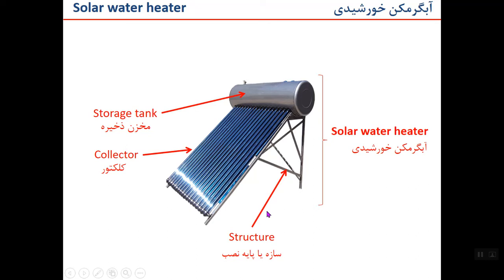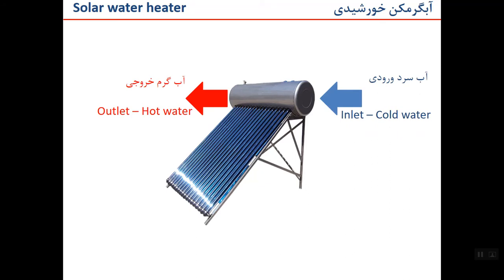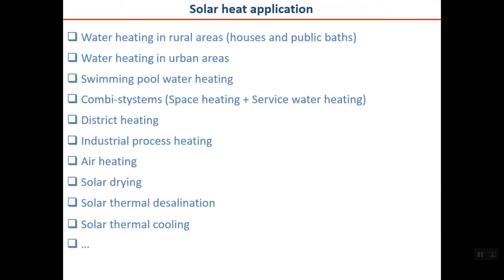This is a thermosiphon system, but if the system is a pumped type then other devices may be used. The purpose is simple: cold water enters the solar water heater and at the outlet you have hot water. So a solar water heater is used to produce hot water for different applications.